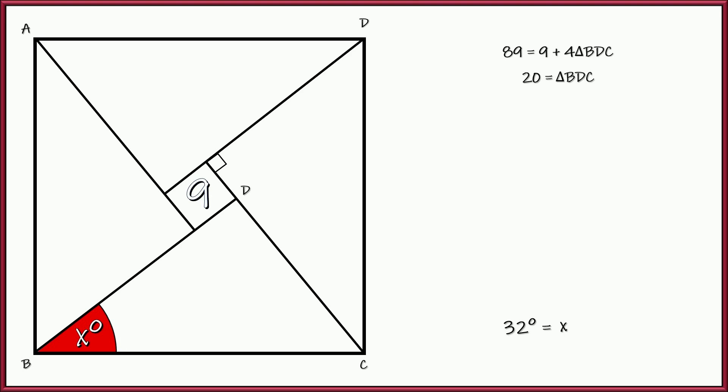Right? We started off with the area of the square being 89 and the square being this little square plus the four triangles. And we simplified that, and then we said that, well, one half base times height, that's the triangle.